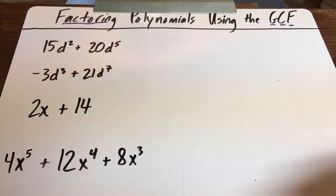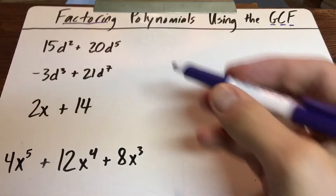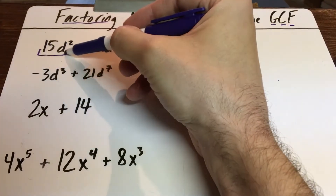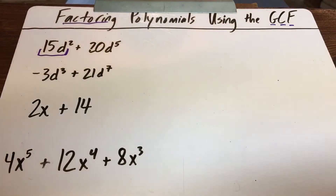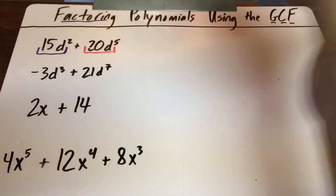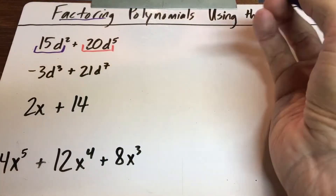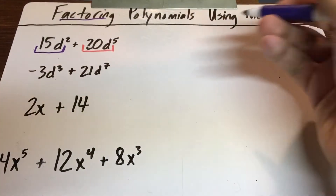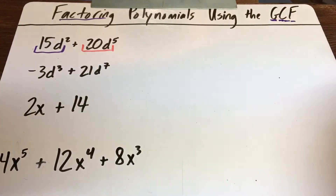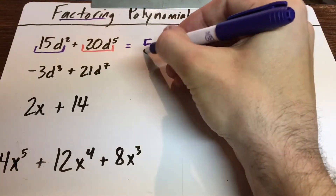I'm going to assume that a lot of my students have already done this in seventh grade, maybe sixth grade. Whenever you need to factor something, you look at both terms individually and ask yourself what they have in common—what's the biggest number that goes into both? Out of 15 and 20, what's the greatest common factor I could divide both those numbers by? Obviously you can divide both by five, so we're going to factor out the five.